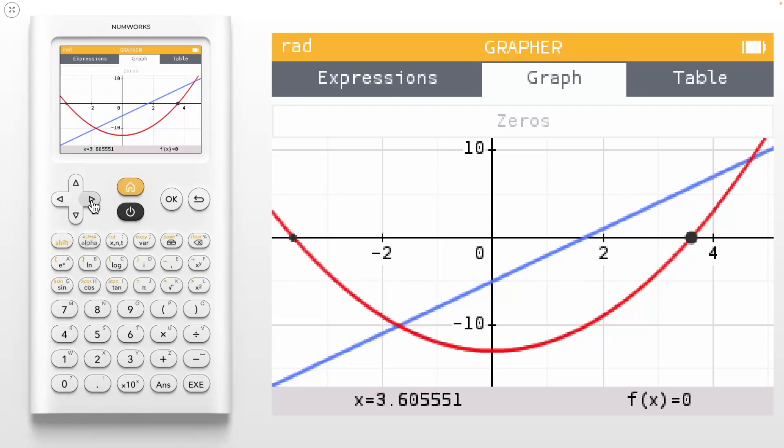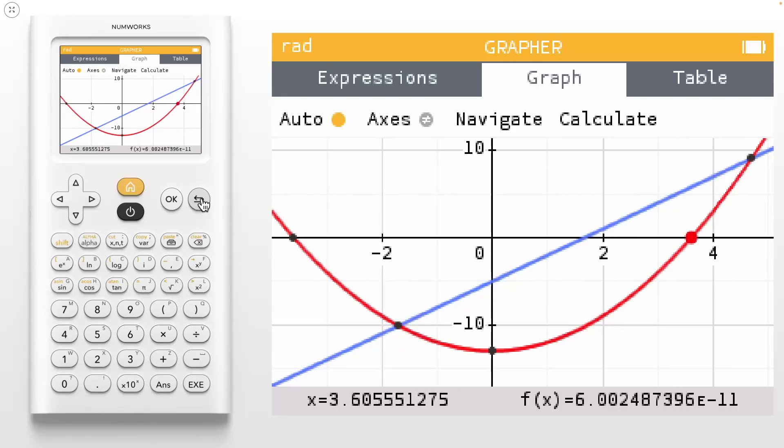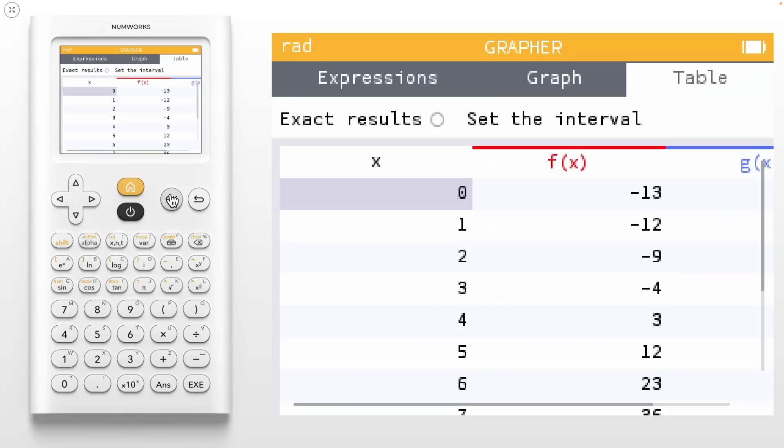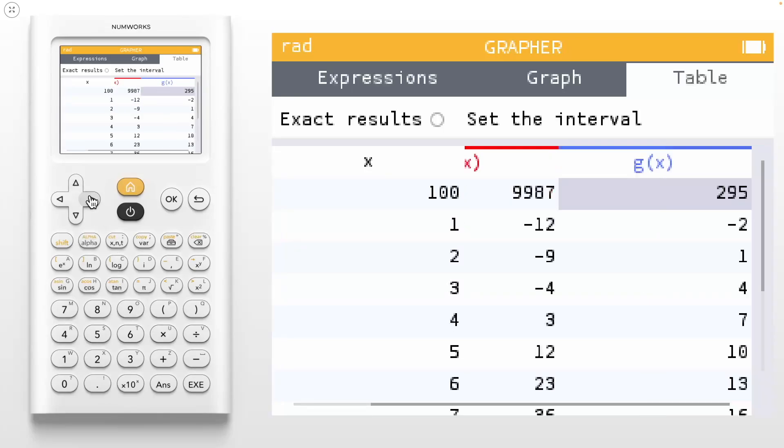Let's take a look at the table tab by using the up arrow key to move to the tabs. The table tab shows values of f of x and g of x for given x values. We can set the interval for x by navigating up to set the interval. Or you can type an x value directly into the table. So if we want to see what f of x and g of x are when x equals 100, simply type 100 into the x column of the table and we will see f of x is 9,987 and g of x is 295.